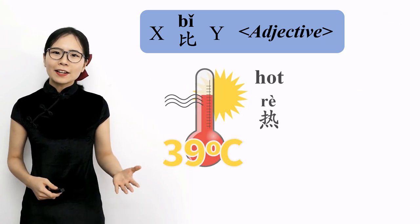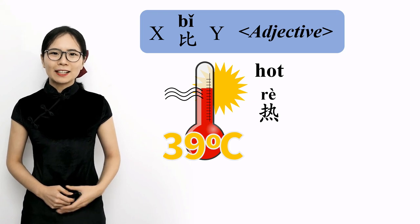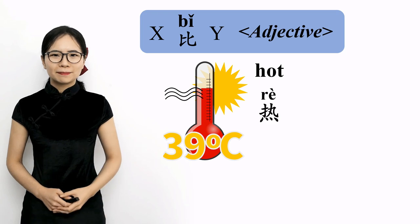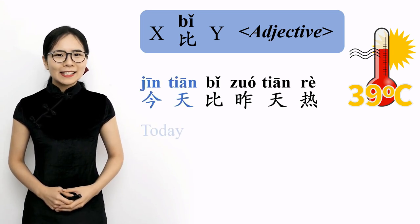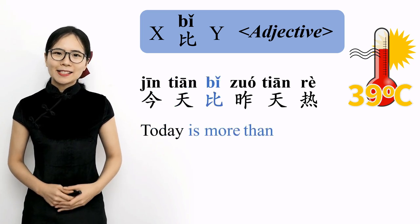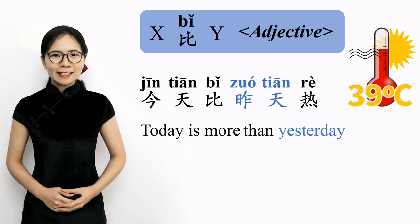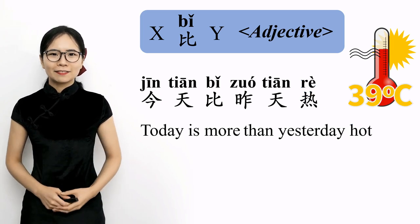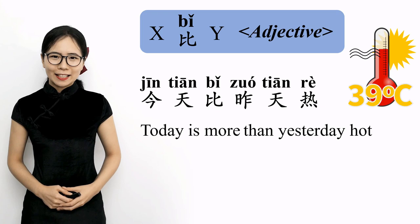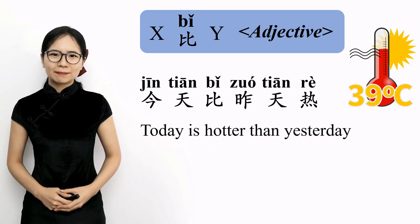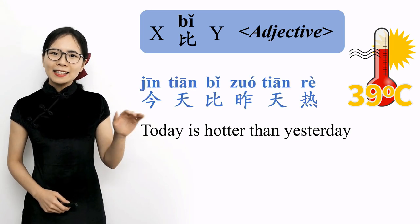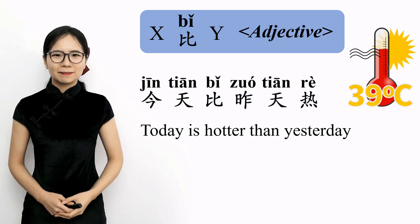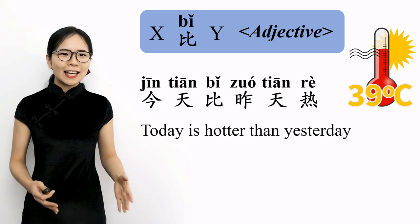The Chinese word for hot is 热. Please repeat after me: 热 — hot. Today is hotter than yesterday: 今天比昨天热. 今天 means today, 比 means is more than, 昨天 means yesterday, and 热 is an adjective meaning hot. Literally, 'today is more than yesterday hot.' In other words, today is hotter than yesterday. Please repeat after me: 今天比昨天热. 今天比昨天热 — today is hotter than yesterday.